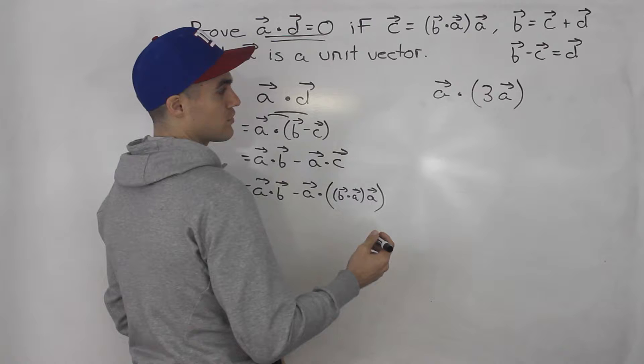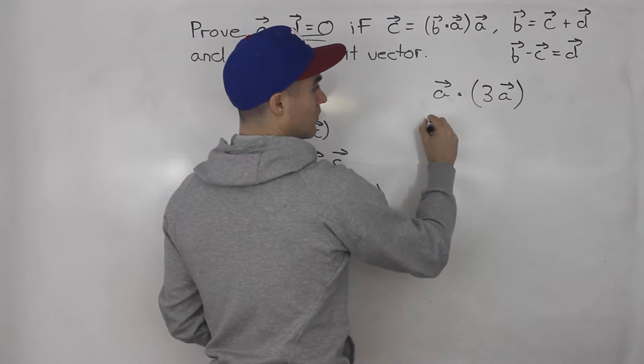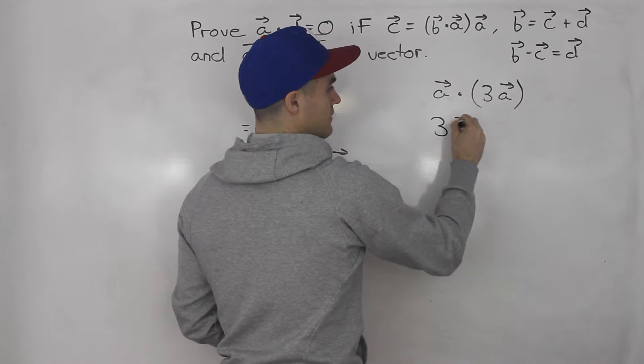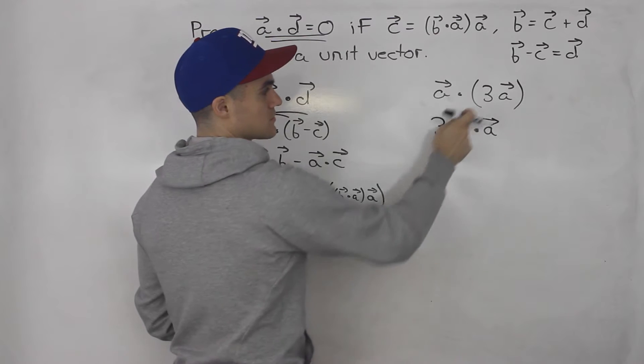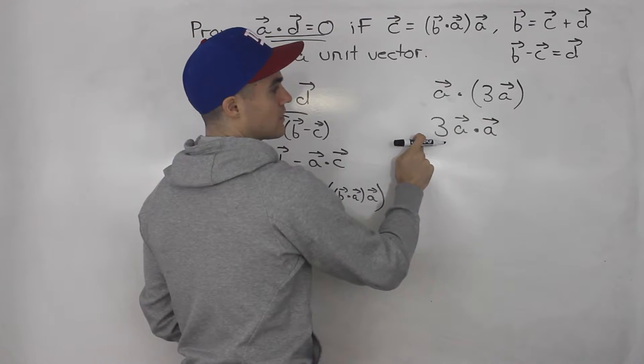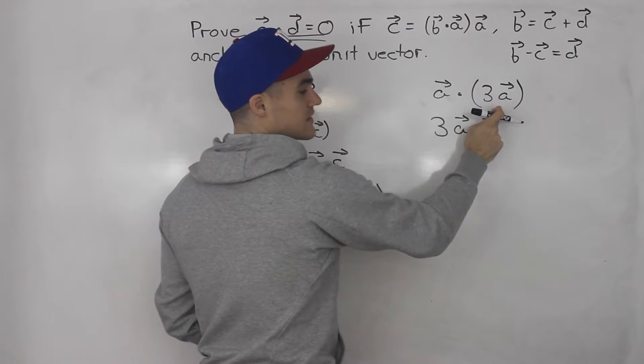Well, with using dot product rules, what we can do is we take the three out and just rewrite this as three times a dot a, like that. Same thing. So we could take that scalar, we could put it in front, and then we can just take the dot product between those two vectors there. That's a rule.